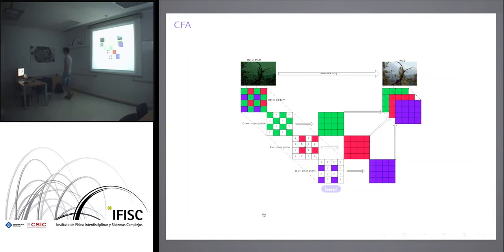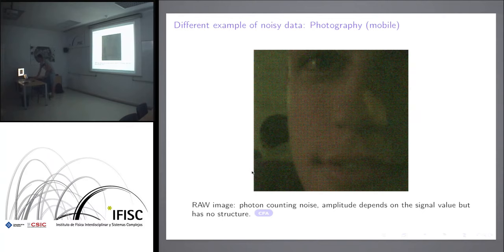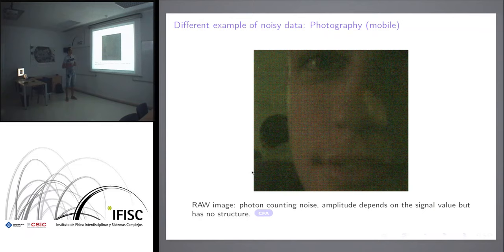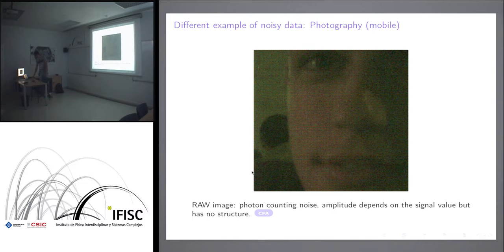A color image usually has 8 bits per pixel, with values between 0 and 255. In raw format, we have up to 15 bits per pixel, with values up to about 35,000. So even if you don't see detail in the raw image, there is a lot of information there that we cannot see because of the difference in bit depth between the visualization and the raw data. And in the raw, there is a lot of noise, but since the image is dark, we don't see it.